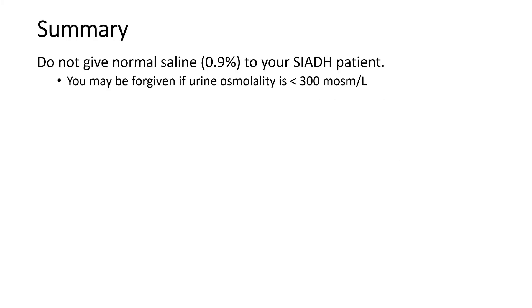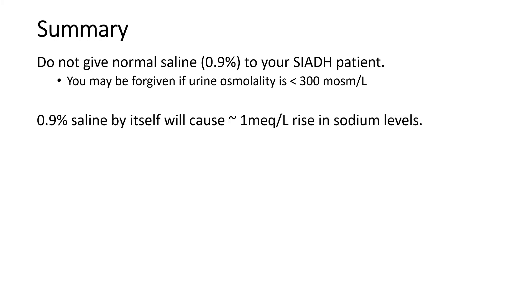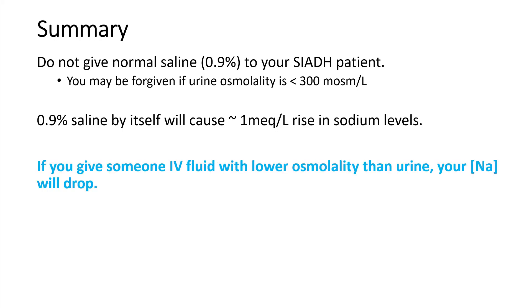In summary: do not give normal saline to your SIADH patient. You may get lucky if urine osmolality is less than 300 mOsm/L, but most of the time you will worsen the hyponatremia. Normal saline alone causes less than a 1 mEq/L rise in sodium. Always compare the osmolality of the IV fluid you are giving against urine osmolality when managing patients with hypo- or hypernatremia.